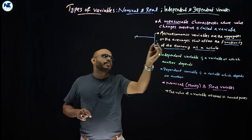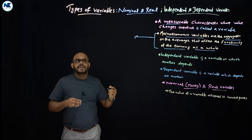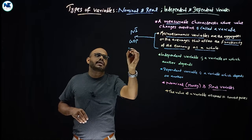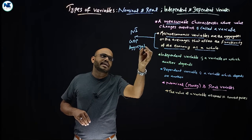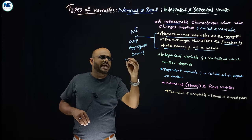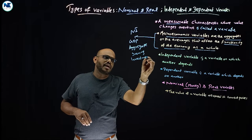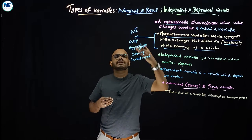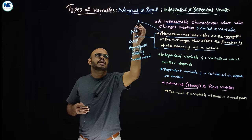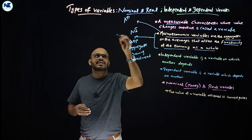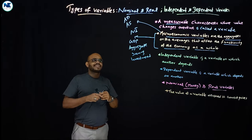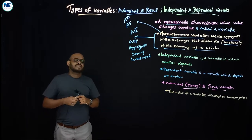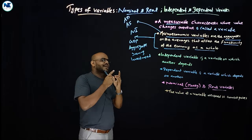What are the typical examples of macroeconomic variables? We can take national income, GDP, aggregate saving, aggregate investment, price level, inflation, deflation, exports, imports, aggregate demand, and aggregate supply. All of these are macroeconomic variables.